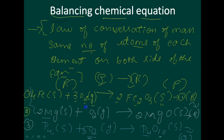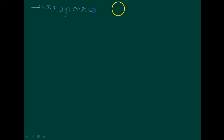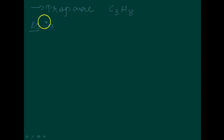Next I will tell you the steps to convert an unbalanced equation into a balanced chemical equation. Let us take the combustion of propane. Propane is C₃H₈. The example is the combustion of propane. Please note down the steps.